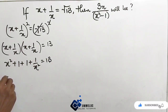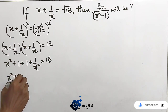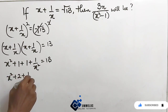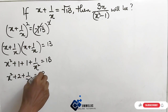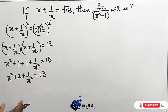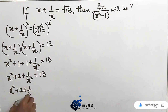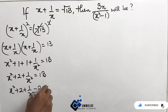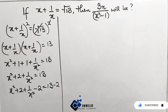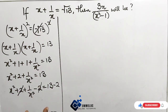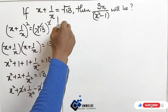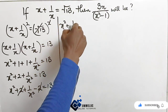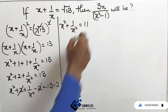Moving forward, we have x squared plus 2 plus 1 over x squared equals 13. Now let us subtract 2 from both sides: x squared plus 2 plus 1 over x squared minus 2 equals 13 minus 2. The two values eliminate each other, and we are left with x squared plus 1 over x squared equals 11.